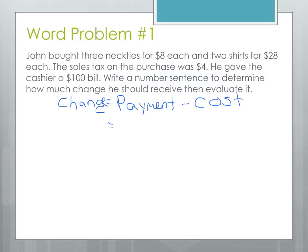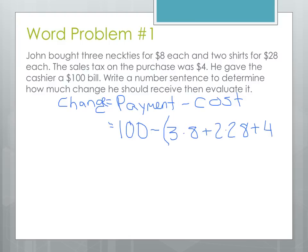The payment: he paid $100. And then we need to subtract from that $100 the cost. Well, there's a whole bunch of different things that make up the cost, so we're going to make sure that we write this in parentheses so the whole cost gets added together. Three neckties for $8 each — that's the first thing. We can find that by doing 3 times 8. And we're going to add two shirts for $28, so that's 2 times 28. And the sales tax is part of the cost too, so we need to add that $4 in there.